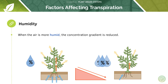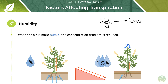Humidity also affects the rate of transpiration. Humidity refers to the concentration of water in the air — in countries near the equator the air is more humid because there's a higher concentration of water in the air. When the air is more humid, there are more water molecules in the region just outside the leaf, which reduces the concentration gradient, because diffusion occurs from high to low concentration.